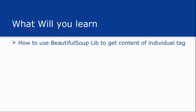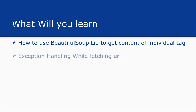In this tutorial we'll see how to use the BeautifulSoup library to get the content of individual tags like a div element, h1 element, the title of the page, or any kind of element — how you can easily extract it from the HTML string you got with the help of the urlopen function. We'll also see how to use exception handling while fetching the URL.